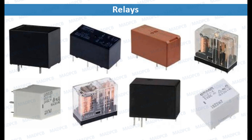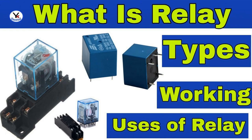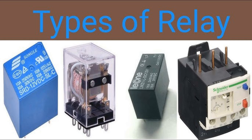Working Principle: Normal Operation — under regular conditions, the current flowing through the relay is within the acceptable range, and the relay remains inactive. Fault Condition — when a fault occurs, like a short circuit or overload, the current exceeds the relay's preset threshold. Relay Activation — the current sensing element detects this excess current, and the operating coil produces a magnetic force proportional to the current. Once the current exceeds the set threshold, the magnetic force moves the relay contacts. Tripping Signal — the relay sends a signal to the circuit breaker to trip, disconnecting the faulty section and isolating the fault to prevent further damage.